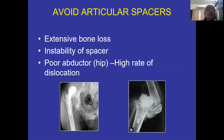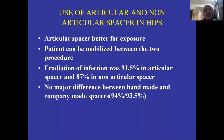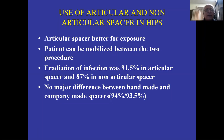Avoid articular spacers in cases of extensive bone loss and spacer instability. Poor abductor hip has a high rate of dislocation. Articular spacers are better for exposure because mobility is good — patients are mobilized well, psychologically walking around with a walker. The eradication of infection is 91% with articular spacers, 87% with non-articular spacers — not a major difference. There is also no major difference between handmade and company-made spacers; whatever is possible, you can use.